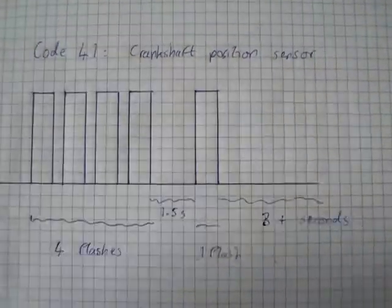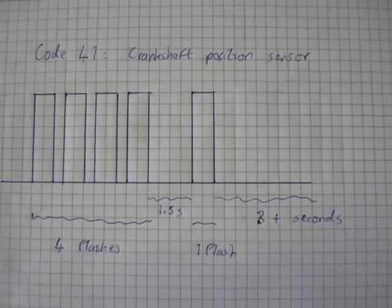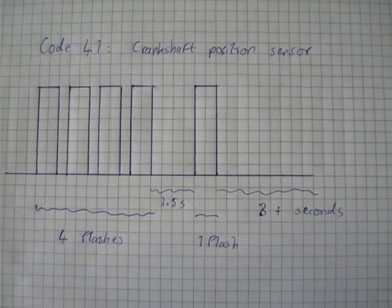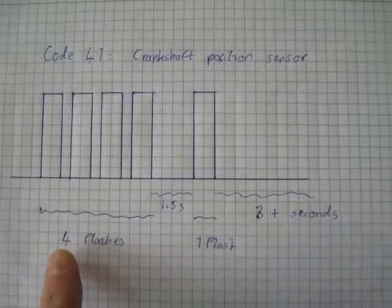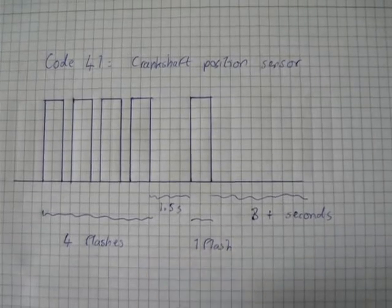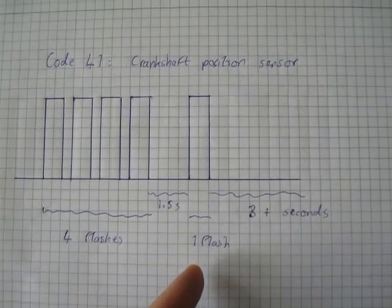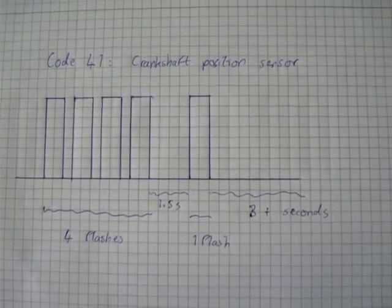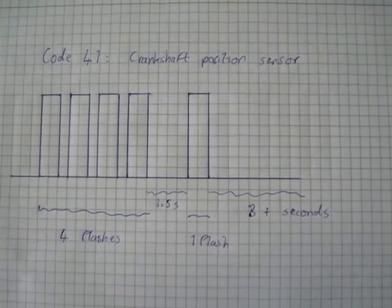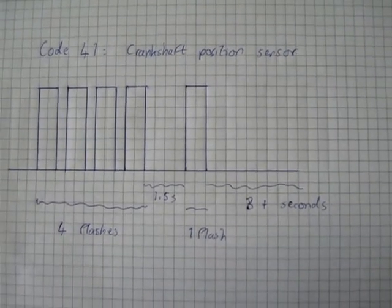An example of an actual fault code would be a code 41, which signifies the crankshaft position sensor or its circuit. This is given by four flashes in quick succession - flash, flash, flash, flash - then a pause of around one and a half seconds, then one flash. After three seconds, the LED lamp should come back on, and then you can perform the code reading again to get the next code or to get the ending code.